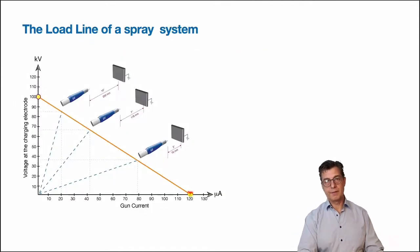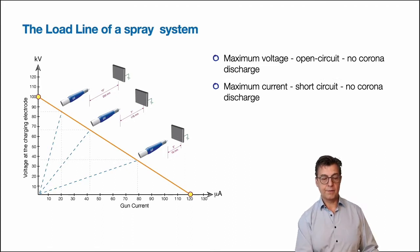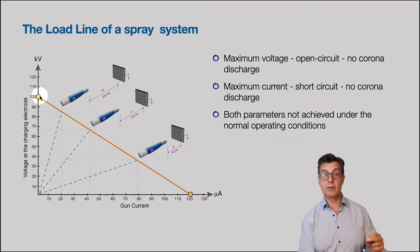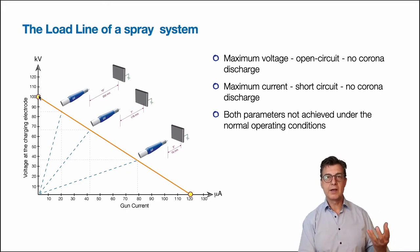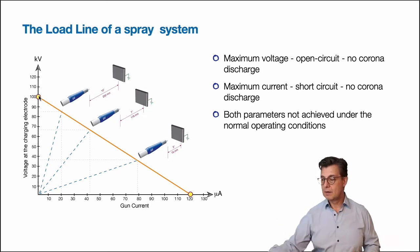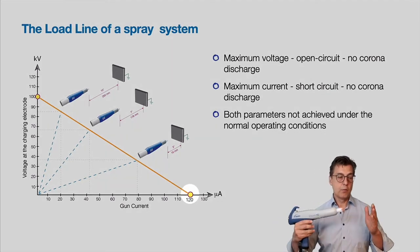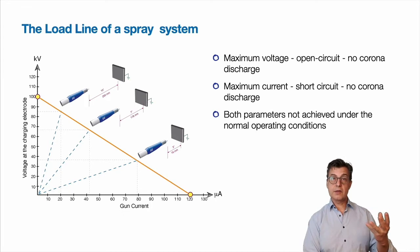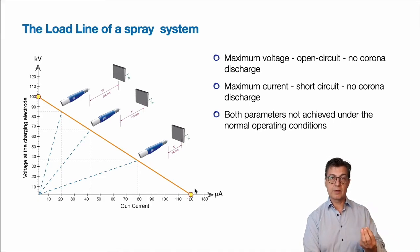What about the maximum values that manufacturers declare — the maximum voltage and maximum current? The maximum voltage of 100 KV is only possible in the open-circuit condition when there is no corona discharge and no current — imagine a gun suspended in the middle of a large room with no ground. The maximum current is the short-circuit current, which happens when the gun actually touches the product. Both of these maximum values never happen in normal operation. They are meaningless.